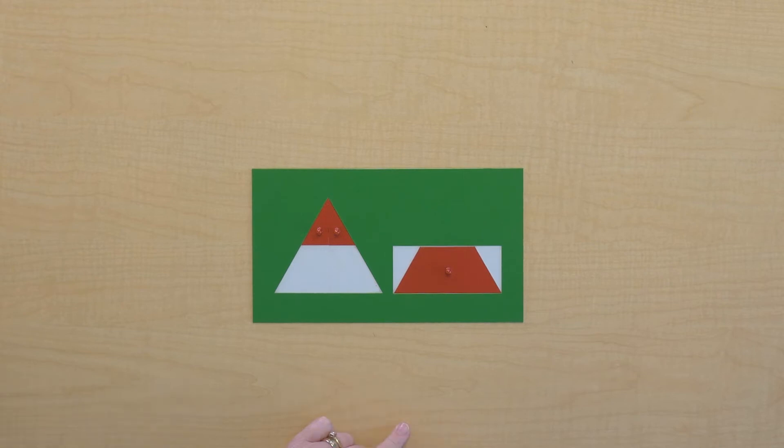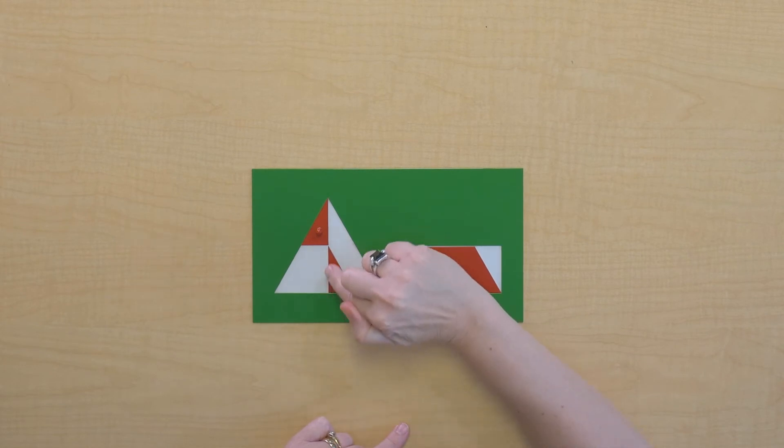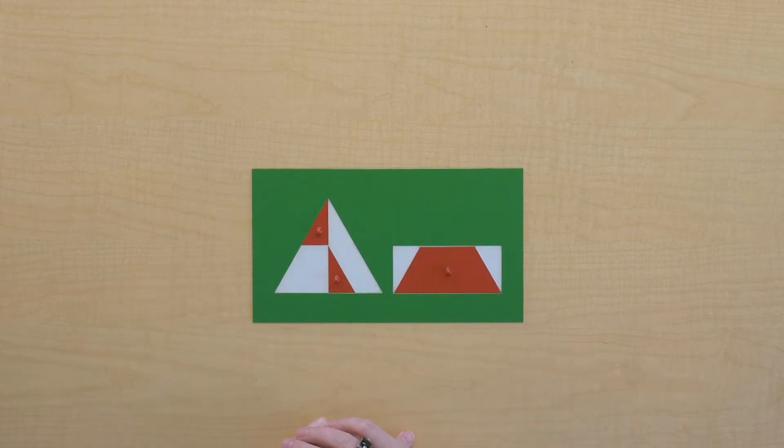Let's take a look at something else here on the triangle. If I put this here, this line that we can see right here, that's the height of this triangle. Let's see how that compares to the height of our rectangle.